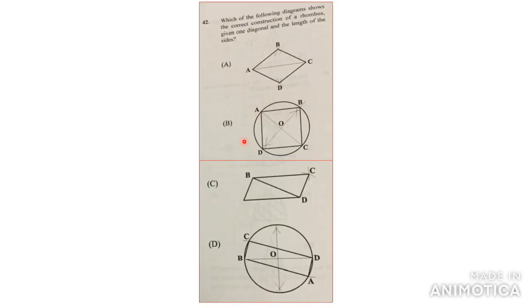Alright, number 43, which of the following diagrams shows the correct construction of a rhombus, given one diagonal and the length of the side? So if you are given the diagonal, actually you should know what a rhombus is first of all.